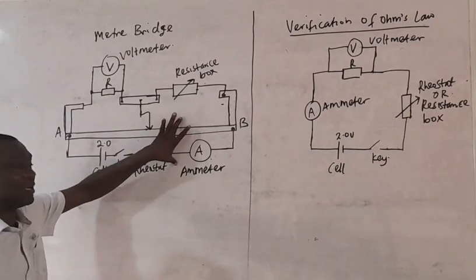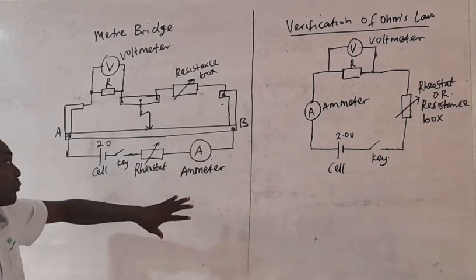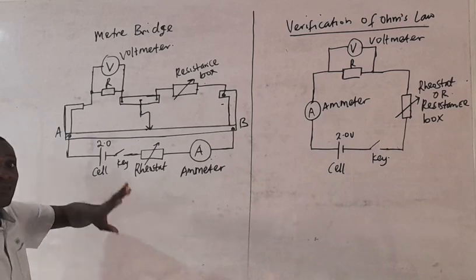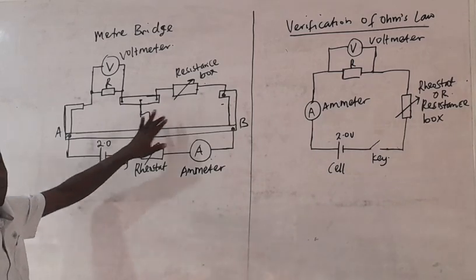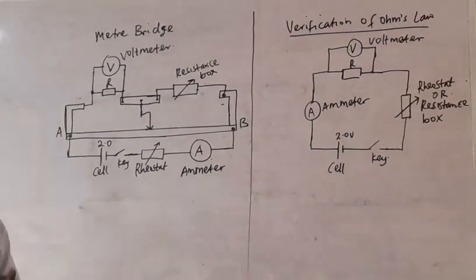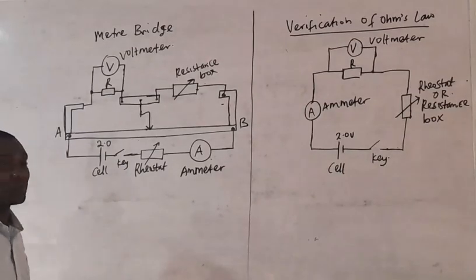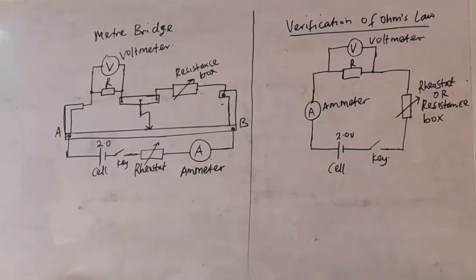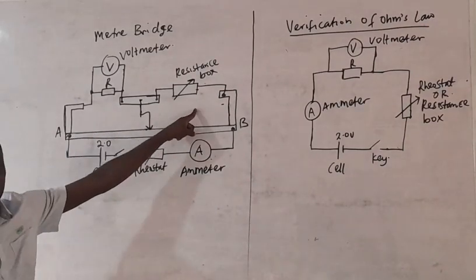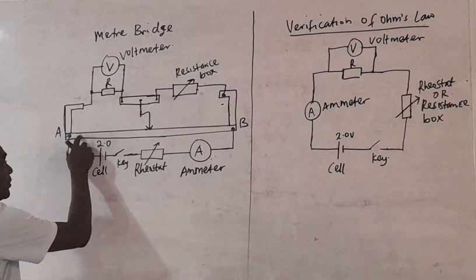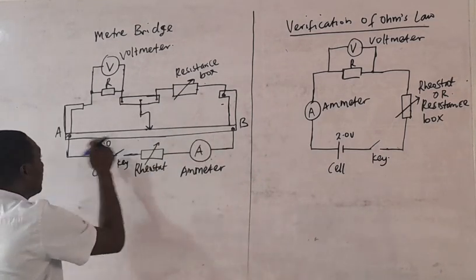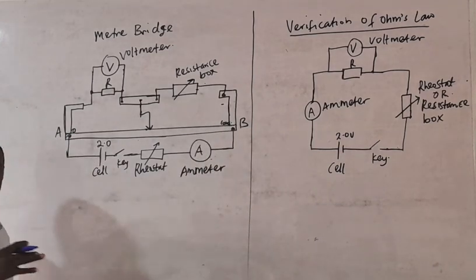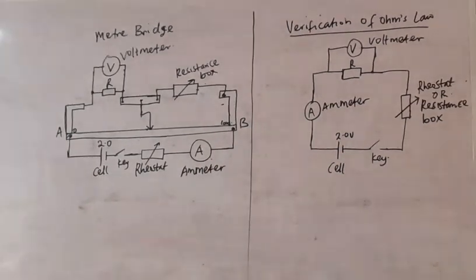So you can look at the diagram here. This is a possible case scenario for the physics practical — the combination of all the materials that are required for the practical. So here you can see this is a meter bridge, from 0 to 100. That's why it's called a meter bridge — because it's 100 cm, that's a meter long.